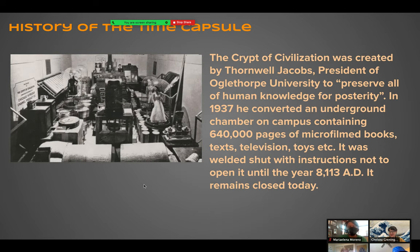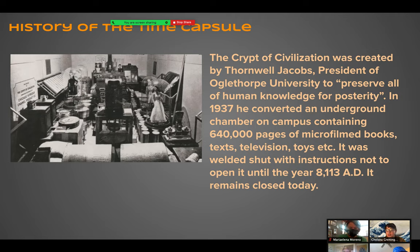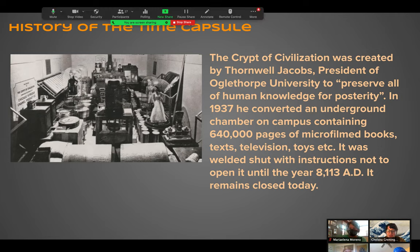The Crypt of Civilization was created by Thornwell Jacobs, president of Oglethorpe University, who said — quote — 'to preserve all of human knowledge for posterity.' In 1937, he converted an underground chamber on campus containing 640,000 pages of micro-filmed books, text, television, toys, etc. It was welded shut with instructions not to open until 8,113 AD. It's only 2021 right now, so the thought that this university time capsule would still exist until year 8,100 is pretty pretentious — but maybe it will be.